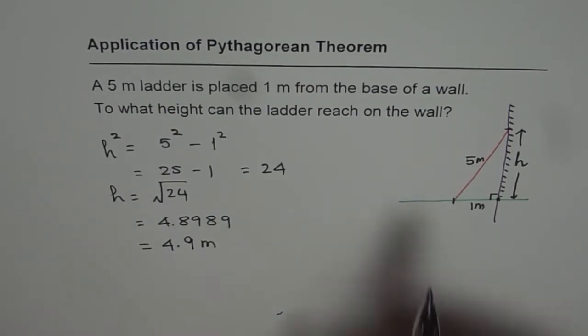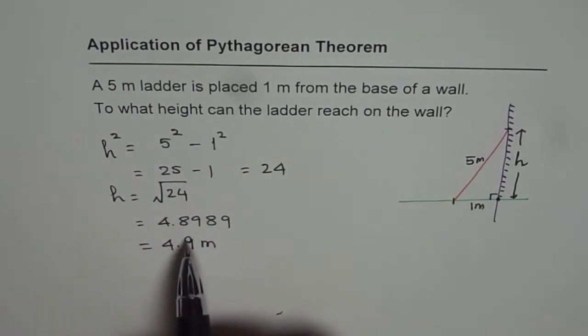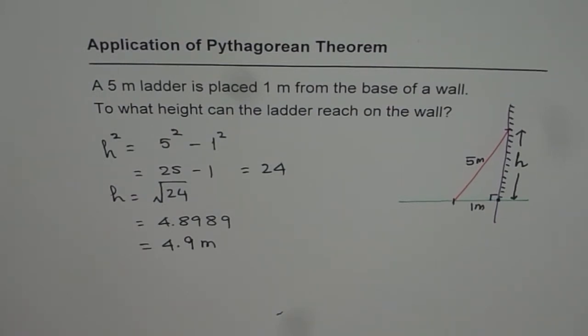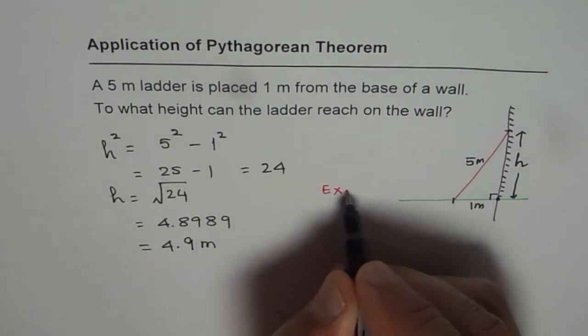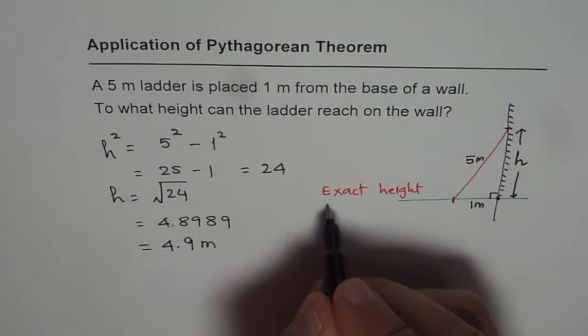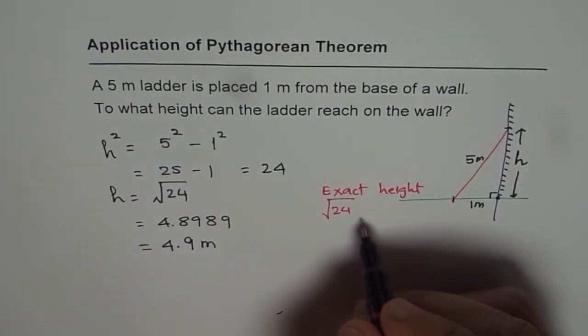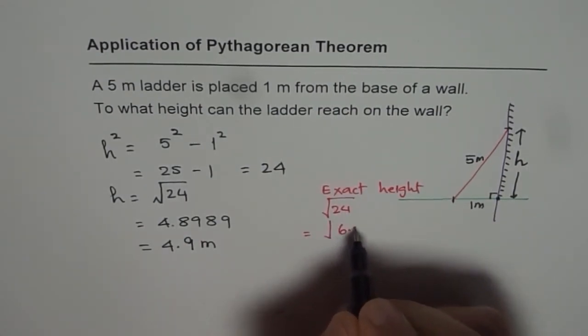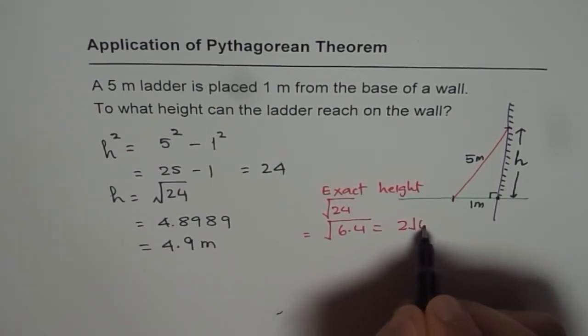Sometimes we can say, what is the exact height? If it is exact height, we should not write answer in decimal places. So I'm just telling you, it may not be required for this question, but sometimes the question may be asking for exact height. In that case, we'll write square root 24 in the form of its factors. 24 could be written as 6 times 4 and that gives you the answer as 2 square root 6.